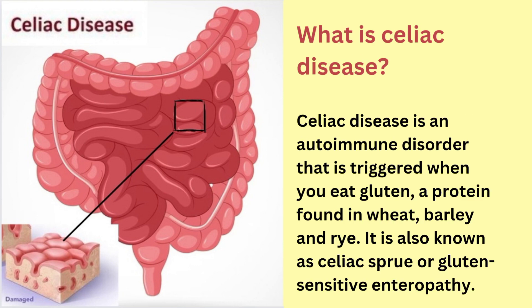What is celiac disease? Celiac disease is an autoimmune disorder that is triggered when you eat gluten, a protein found in wheat, barley and rye. It's also known as celiac sprue or gluten sensitive enteropathy.